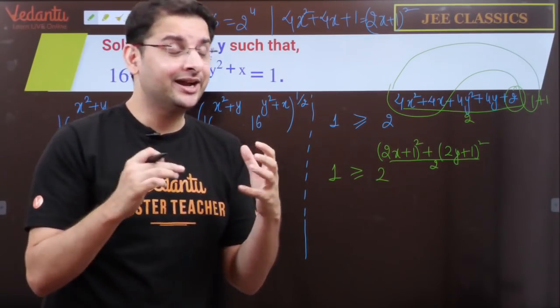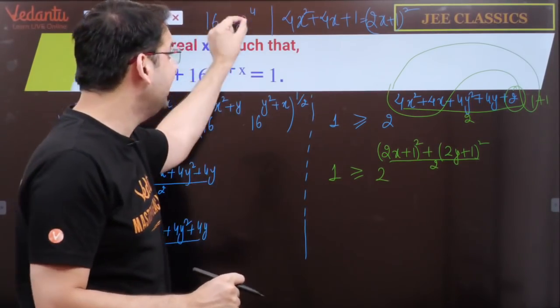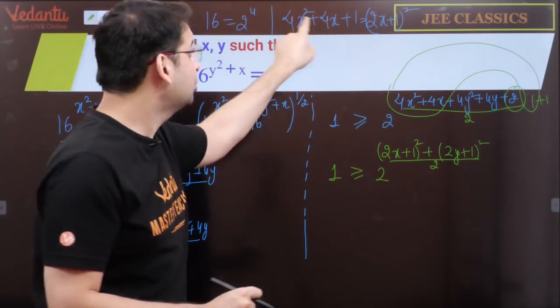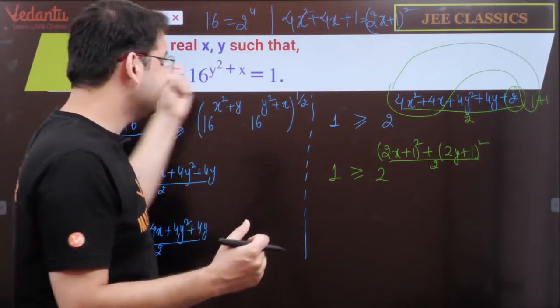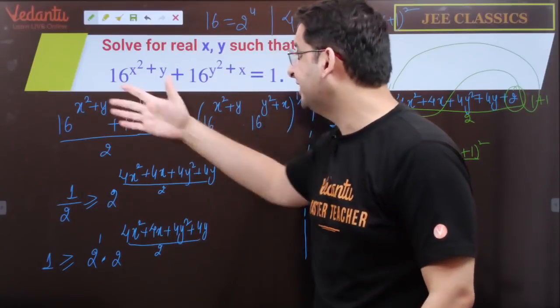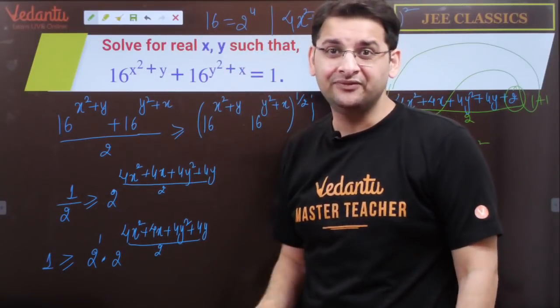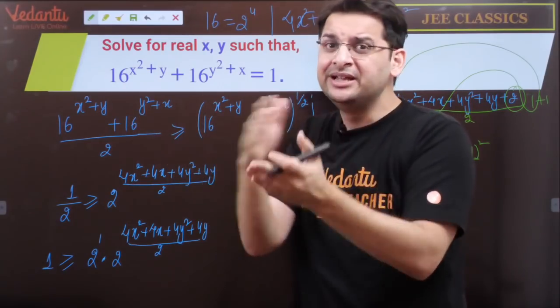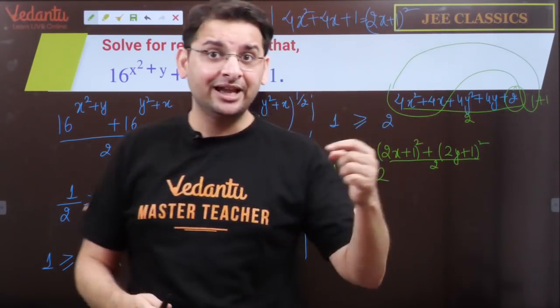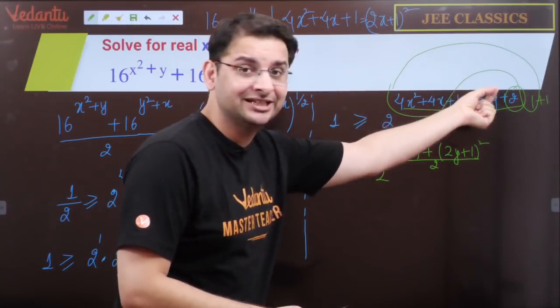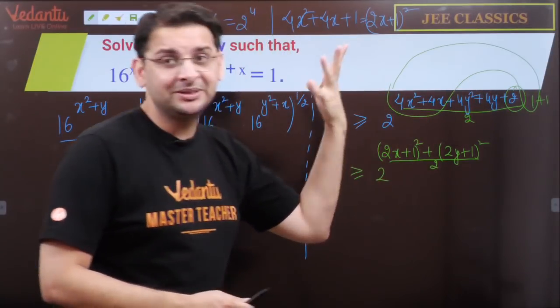Now things become easier because when variables are reduced. One advantage of completing the square is that it converts x² and x, these two terms, into a single term like 2x+1. So initially the question had four types of variables - x², y, y², x - though they're related but in different forms. We converted these four into two variables through square completion.